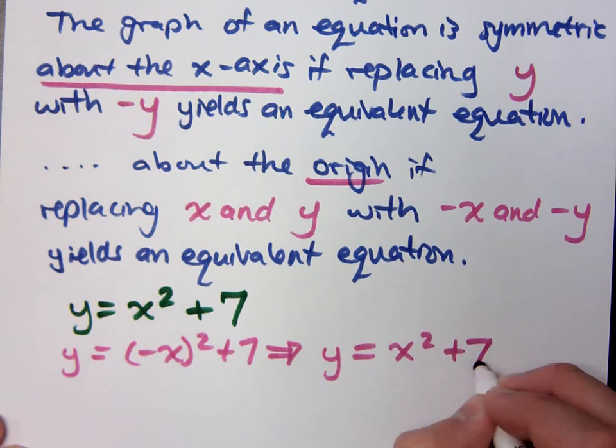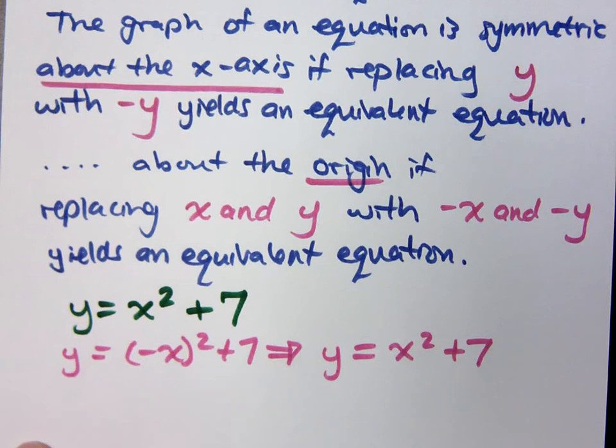Isn't that still x squared plus 7? So if I replace x with negative x and it doesn't change the equation, then what type of symmetry will I have? No, what do I just write down? Oh, just x.